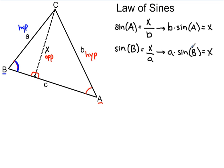And we can see here, once we solve both of these equations for X, that B times the sine of A equals X and A times the sine of B equals X, well, that must mean that these two things are equal to each other. So let's go ahead and write that down. We can say that B times the sine of A is equal to A times the sine of B.